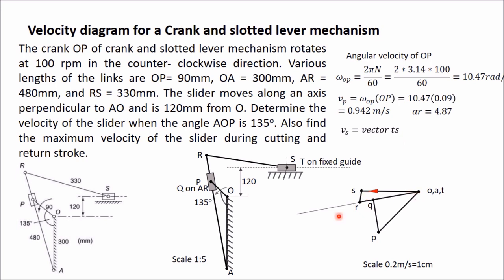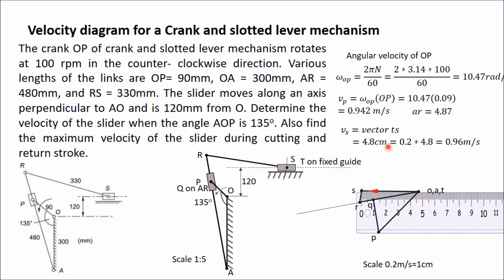The absolute velocity of S is the vector TS. At this moment S is traveling towards the left. Measure this length — you get 4.8 cm. Multiply by the scale factor 0.2 m/s per cm, giving 0.96 m/s. So the velocity of the slider at this particular moment is 0.96 m/s towards the left.